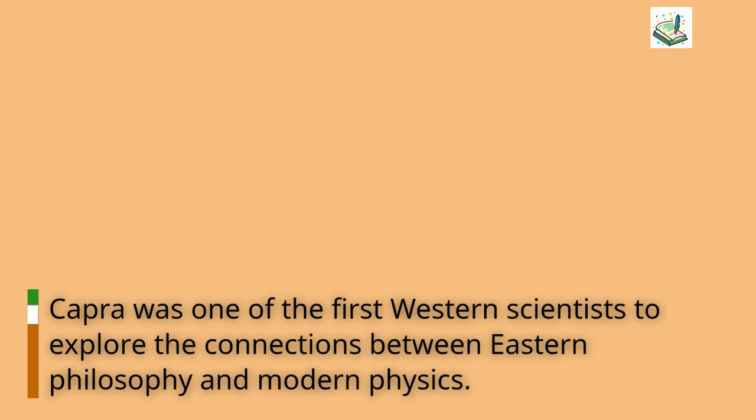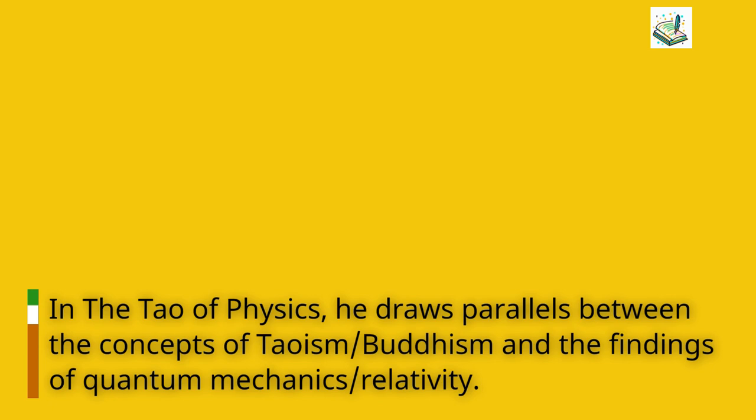Capra was one of the first Western scientists to explore the connections between Eastern philosophy and modern physics. In The Tao of Physics, he draws parallels between the concepts of Taoism, Buddhism and the findings of quantum mechanics and relativity.